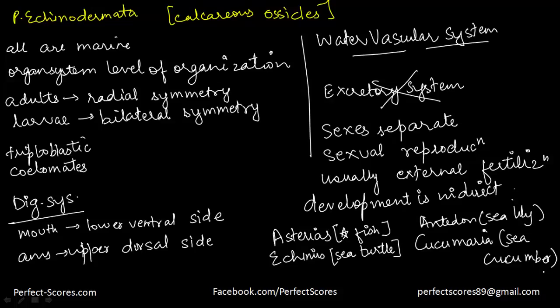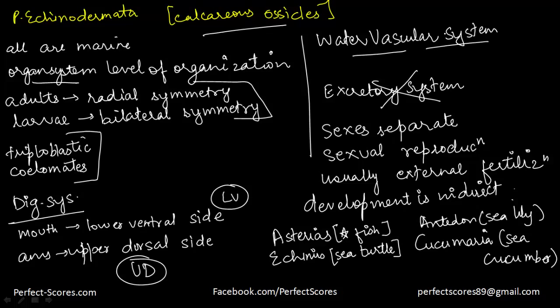To revise the common features of Echinodermata: they have calcareous ossicles; all are marine; they have organ system level organization; adults have radial symmetry and larvae have bilateral symmetry; they are triploblastic with a true body cavity. The mouth is on the lower ventral side and the anus on the upper dorsal side. The water vascular system is present; the excretory system is absent. Sexes are separate with external fertilization and indirect development. Examples include Asterias, Echinus, Antedon, and Cucumaria.